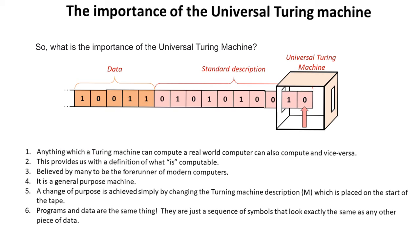Anything which a Turing machine can compute, a real world computer can also compute, and vice versa. This provides us with an actual definition of what is and isn't computable.